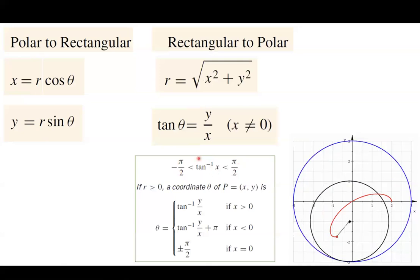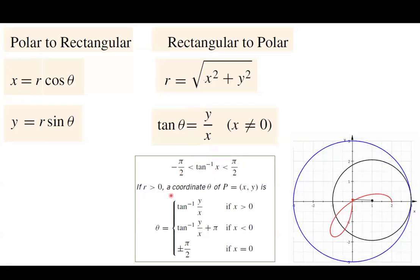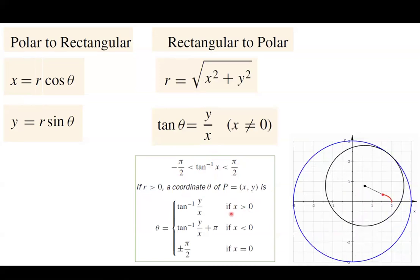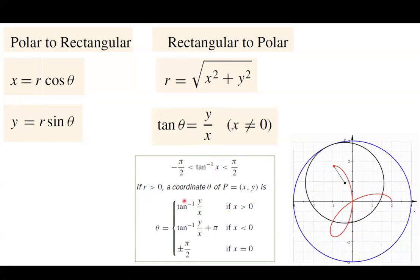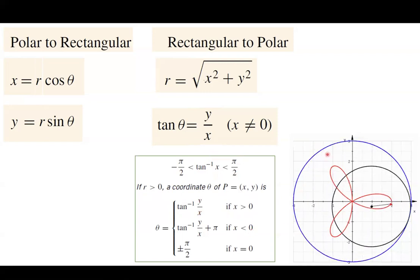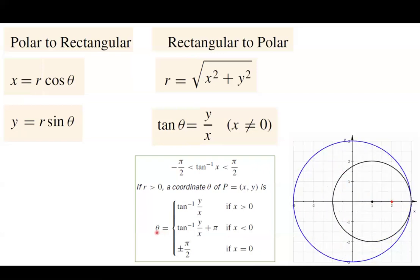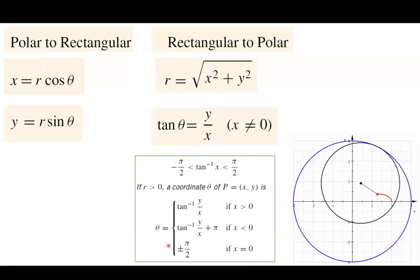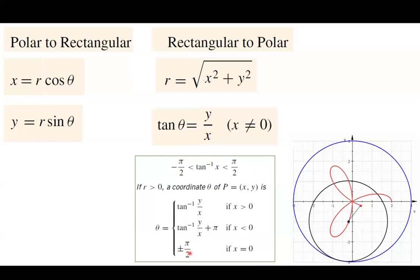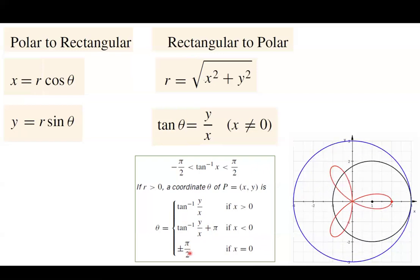That's the way we define a one-to-one function and its inverse. If R is positive, the coordinate theta of P is, for a positive x value, the inverse tangent of Y divided by X. However, if X is negative — meaning the point is in the second or third quadrant — then theta is the inverse tangent of Y divided by X plus pi. And if X equals 0, theta is plus or minus pi over 2. It's important to review precalculus to feel comfortable calculating theta as the inverse tangent of Y divided by X.